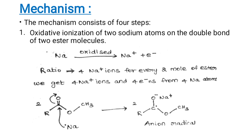In step one, sodium gets oxidized and forms a Na⁺ ion. The electron attacks the electrophilic carbonyl carbon, which is a highly electrophilic carbon, and forms the radical anionic species.